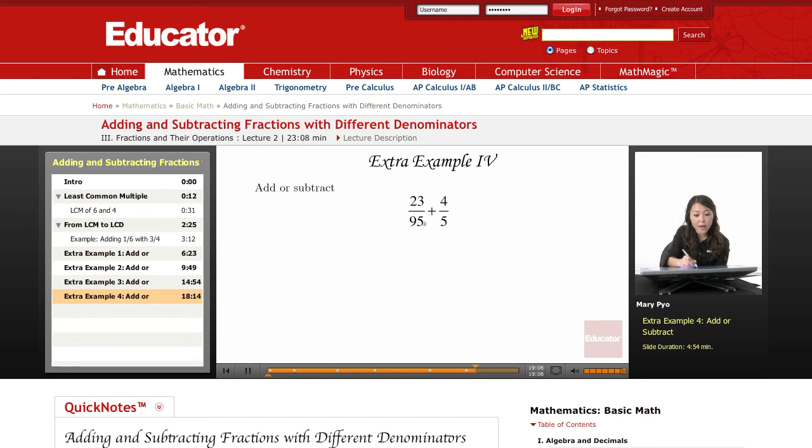Now I know that 95 is divisible by 5 because any number that ends in a 5 or a 0 is divisible by 5. So in this case, if 5 divides into this number, then this becomes the new common denominator, the least common denominator.